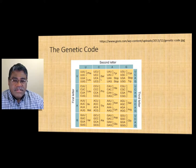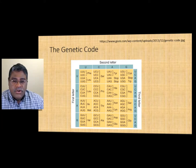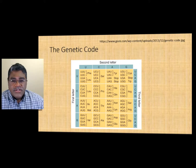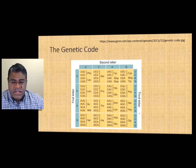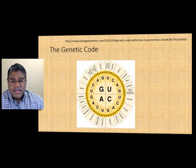For example, everything beginning with UC translates into serine, and AGU and AGC also translate into serine. This is the kind of reference you need when we talk about codons and open reading frames. Here is your start codon, which is methionine, and that is typically AUG — first letter, second letter, and third letter.